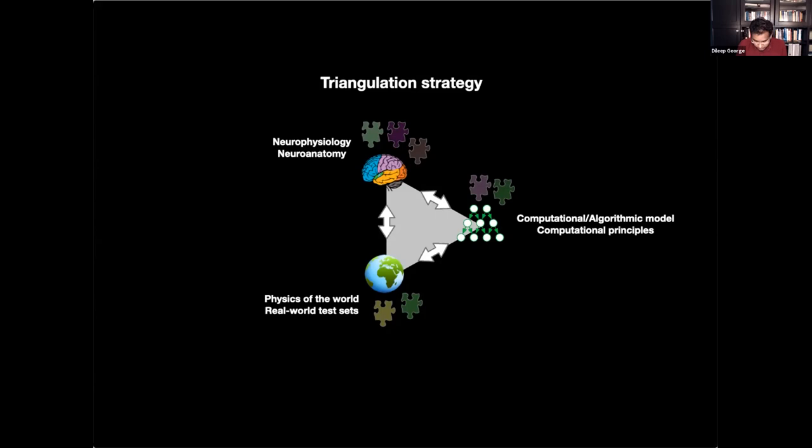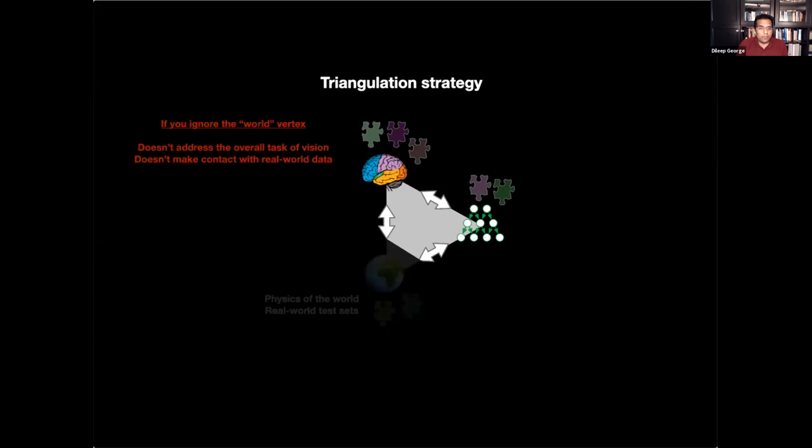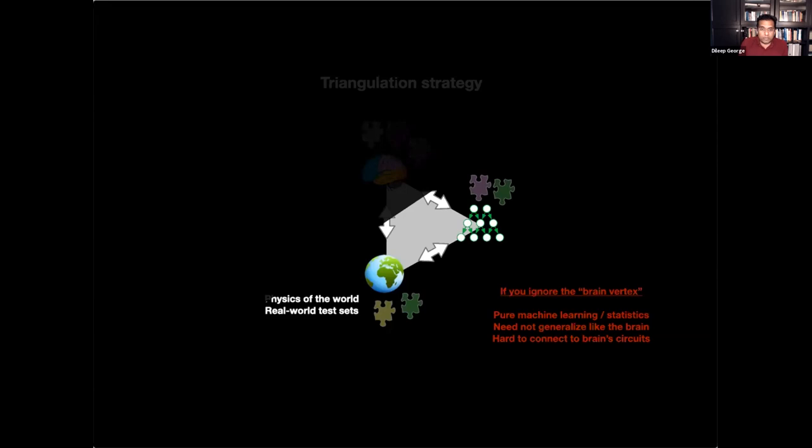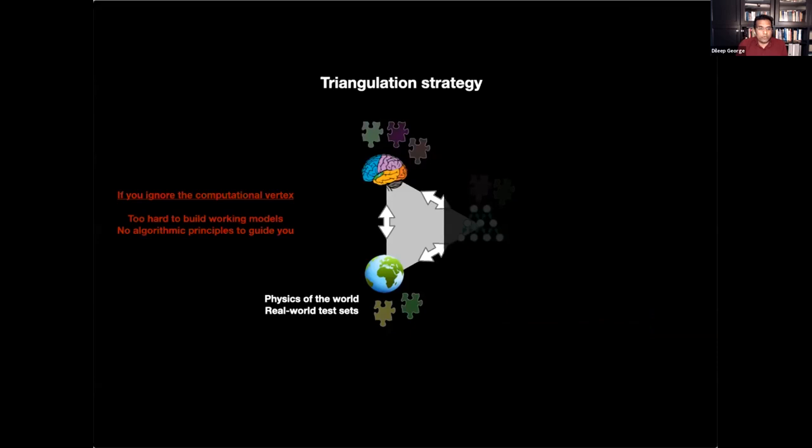And when you can connect all three vertices of the triangle for an organizational feature in the brain, that's when you have found something useful algorithm-wise. For example, if you ignore the world vertex, then you don't address the overall task of vision in solving the problem. If you ignore the brain vertex, that is just pure machine learning and statistics. You don't take any insights from the brain, and you cannot tell anything about the brain. And if you ignore the computational vertex, then you can make local things, but it's very hard to build large models.